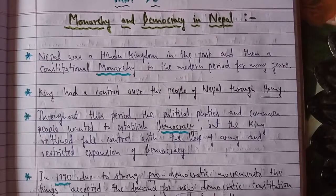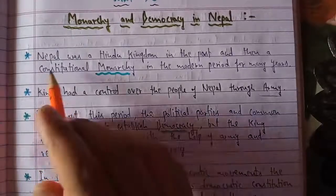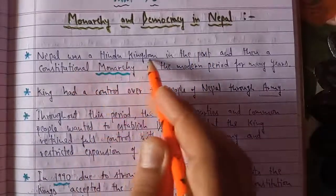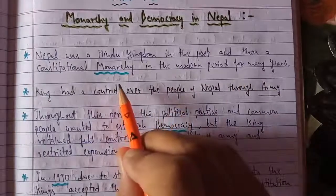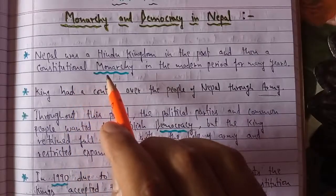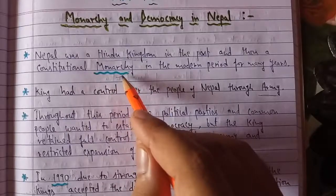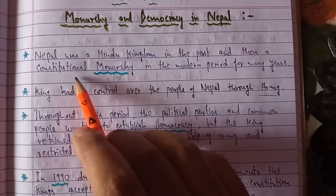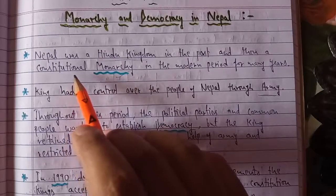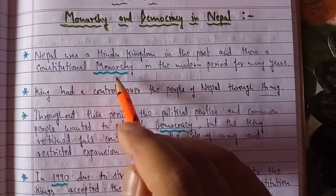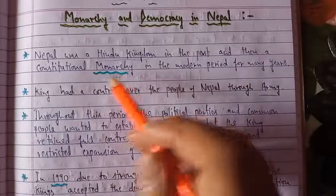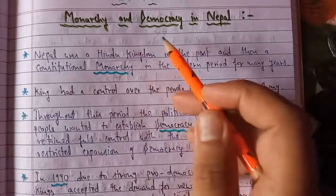Nepal is our neighboring country, a small country sharing our international boundary. In the past, Nepal used to be a Hindu kingdom, and then a constitutional monarchy. Constitutional monarchy means the king's rule existed but his powers were limited by the constitution. There was a parliament and representation by the people, but still at the peak the head was the monarch. We'll see the story of how Nepal went from a Hindu kingdom to a monarchy, then a constitutional monarchy, and finally achieved democracy.